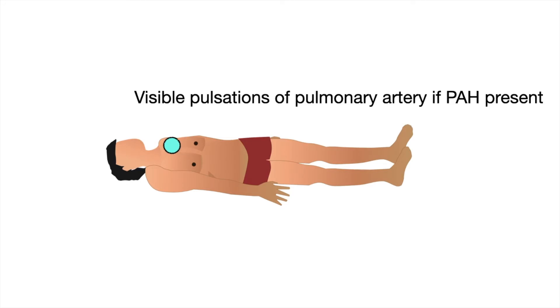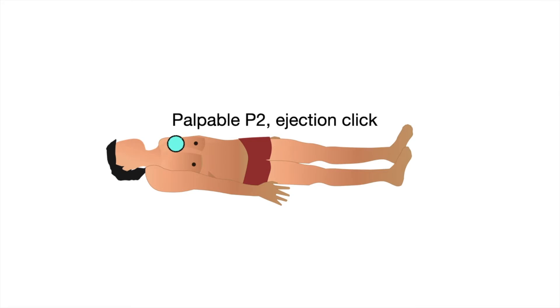Visible pulsations of the pulmonary artery may be seen if pulmonary artery hypertension is present. There can also be a palpable P2 and an ejection click due to the enlarged pulmonary artery.